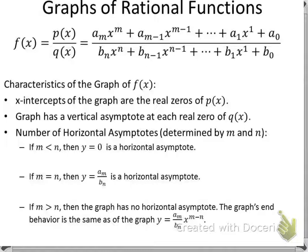We start with f of x equals p of x over q of x, which means we're doing a polynomial divided by a polynomial. We've expanded out a general form for each polynomial: p of x is the top with the a's, m's, and x's, and q of x on the bottom has b, n, and x to the n. This gives us the general form.